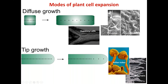Another important place where tip growth occurs in plants is root hairs — single-cell projections on the surface of roots that increase the surface area for absorption of minerals. And pollen tubes are the delivery tubes for the sperm cells so that fertilization can occur and a zygote can form.